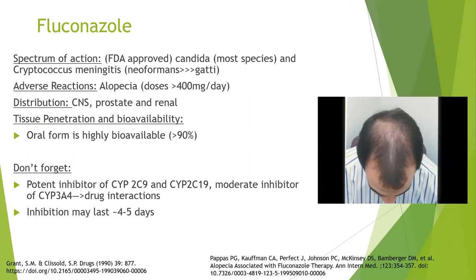Fluconazole is FDA-approved for candida and cryptococcal treatment, as well as specifically treatment of cryptococcal meningitis. At doses more than 400 milligrams a day for long periods, it can cause alopecia. It has good distribution to the prostate and kidneys, and the oral form is highly bioavailable, so you get the same levels with IV as with PO. It is a potent inhibitor of CYP2C9 and CYP2C19 and a moderate inhibitor of CYP3A4; this inhibition may last four to five days.